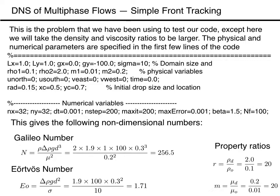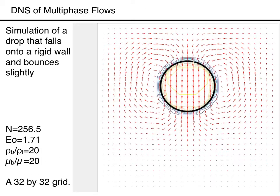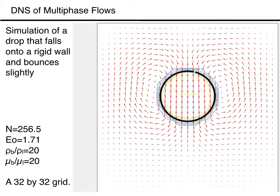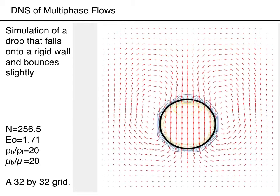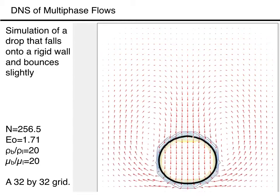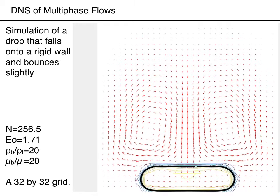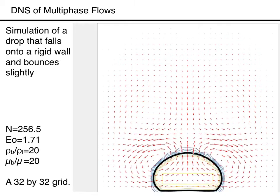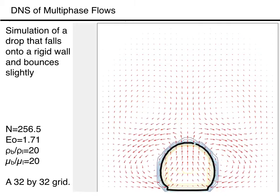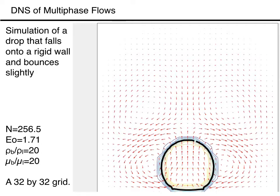For the pressure equation, we specify an error of 0.01, but we also set the maximum number of iterations to 200. For a 32x32 grid, the code runs fast enough so that it can be run interactively, and the drop observed as it falls. The evolution is very similar to what we saw earlier for the lower density ratio. The drop deforms slightly as it falls, flattens as it collides with the wall, rebounds slightly, and then settles on the wall.